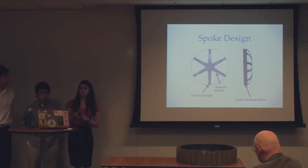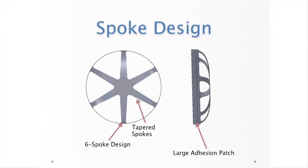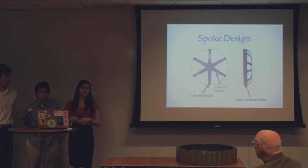This is a more detailed spoke design. Again, we have the tapered spokes, and there are six of them. We also have a large adhesion patch, so that when we do place it into the rim, we have a large quantity of surface area that is connected to one another to hopefully keep them from coming apart, under loading.